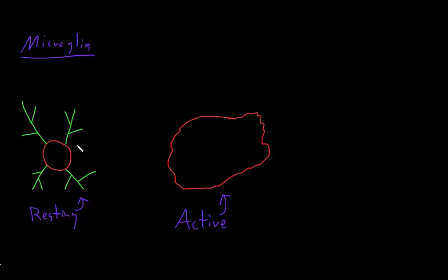When microglia are resting, they're basically just sitting there sampling the interstitial fluid. They have all these long, highly branched processes heading out, just keeping an eye on the interstitial fluid, and they're basically looking for trouble.